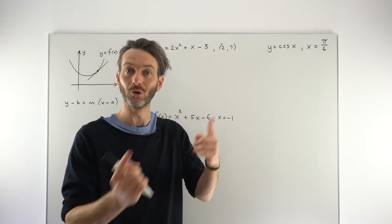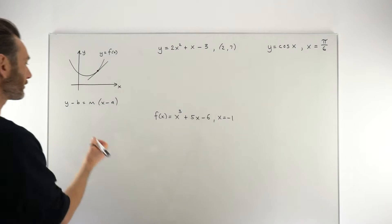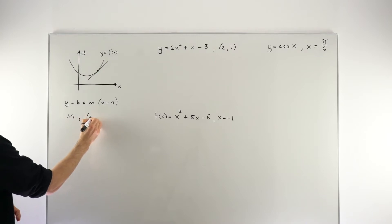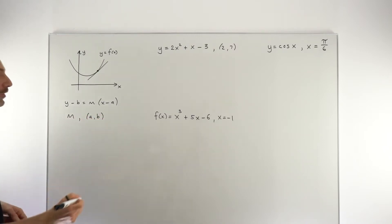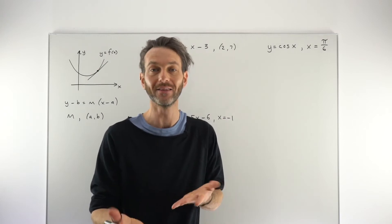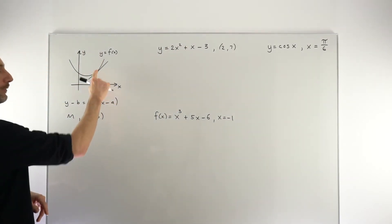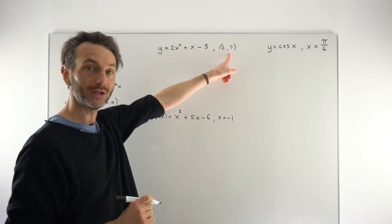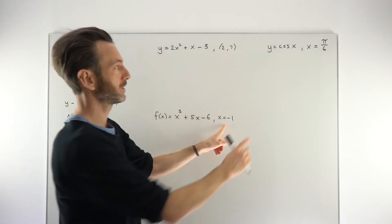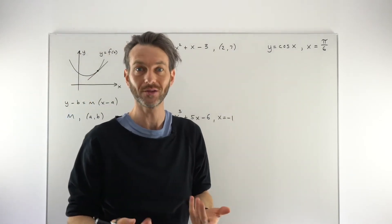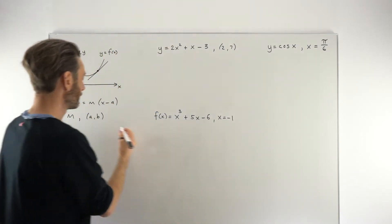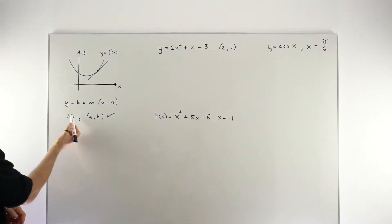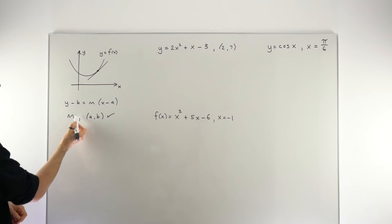Knowing that this is the formula we're going to use means that we just need to track down the things that go into it. The things that go into this formula are the m value, which is the gradient, and the point (a, b), which is any point on the curve and the line — specifically, the point of tangency. Generally in these questions, a point of tangency is going to be given to you, maybe both the x and y coordinates, or just the x coordinate, and then we have to find the y coordinate.